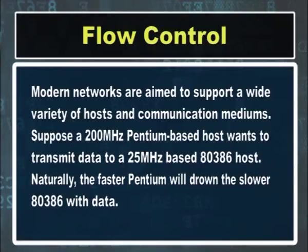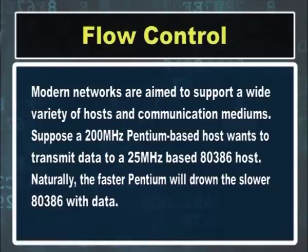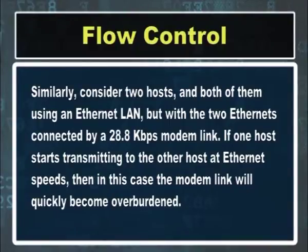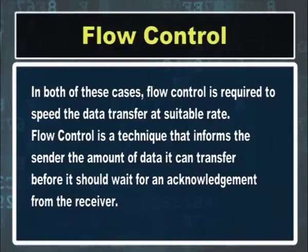Next is flow control. Modern networks support a wide variety of hosts and communication mediums. Suppose a 200 MHz Pentium-based host wants to transmit data to a 25 MHz 80386 host — naturally the faster Pentium will drown the slower 80386 with data. Similarly, consider two hosts using Ethernet LAN but connected by a 28.8 kbps modem link. If one host starts transmitting at Ethernet speeds, the modem link will quickly become overburdened. In both cases, flow control is required to set the data transfer at a suitable rate.